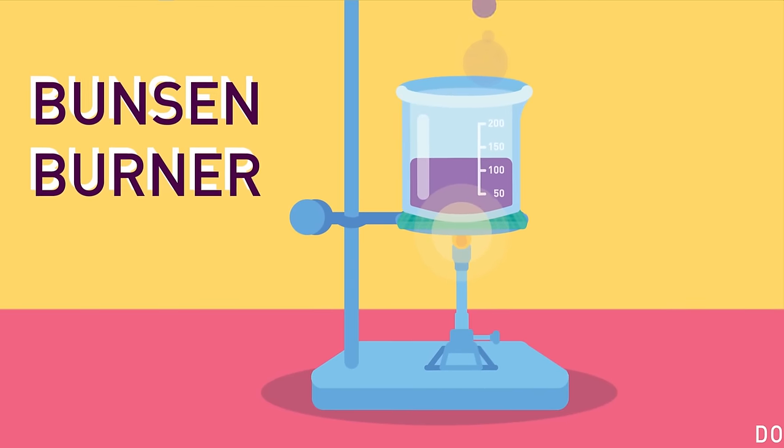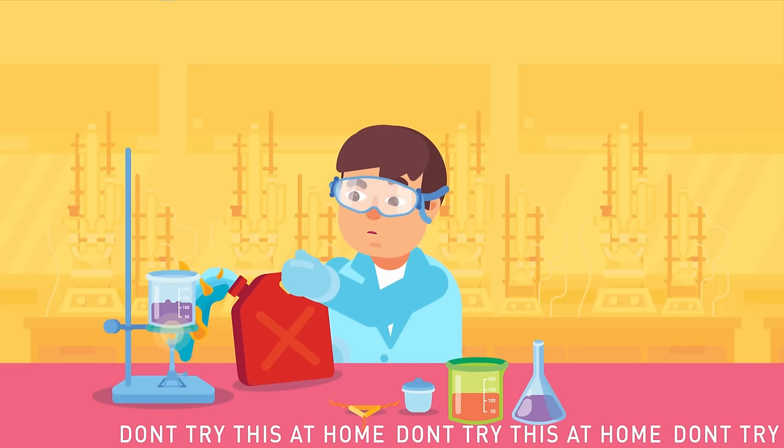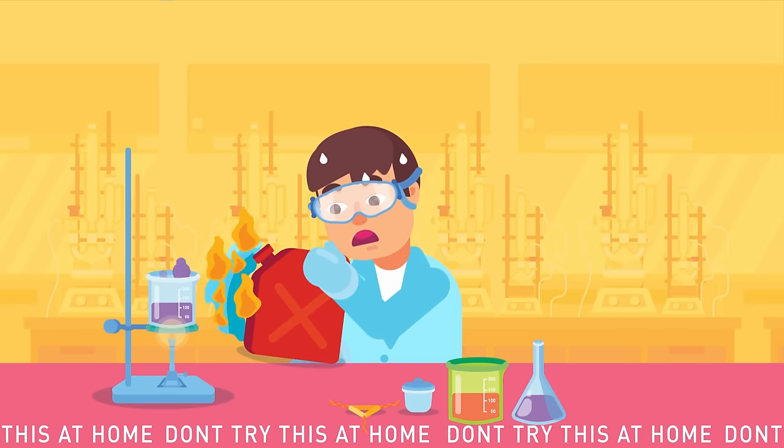Bunsen Burner. Be careful not to put flammable materials like a cloth or chemicals, like aromatic compounds such as petrol, anywhere near it, or this may erupt a fire.